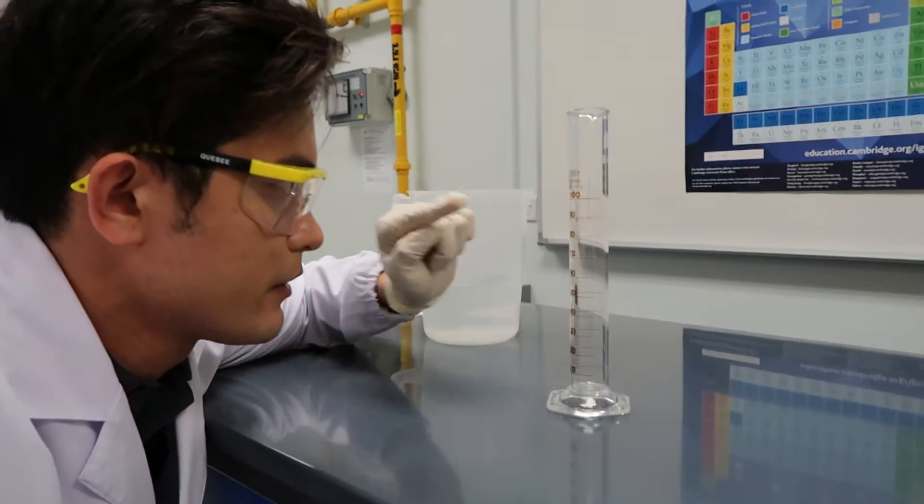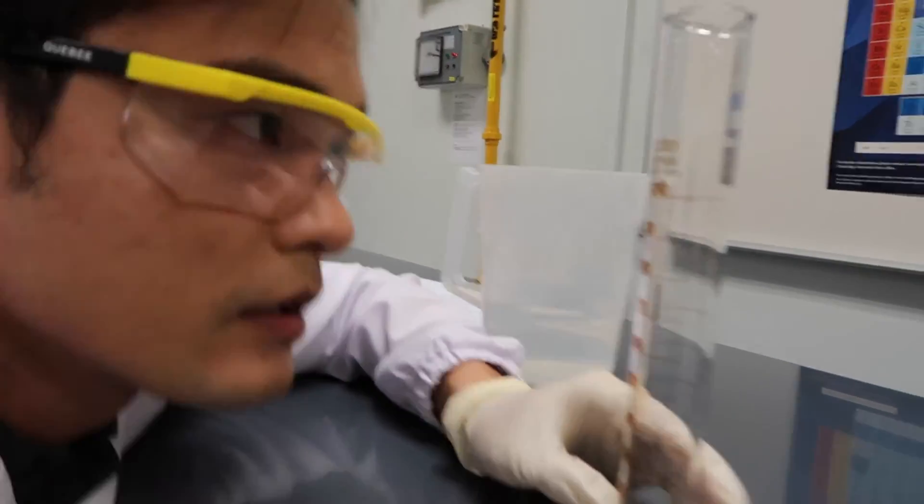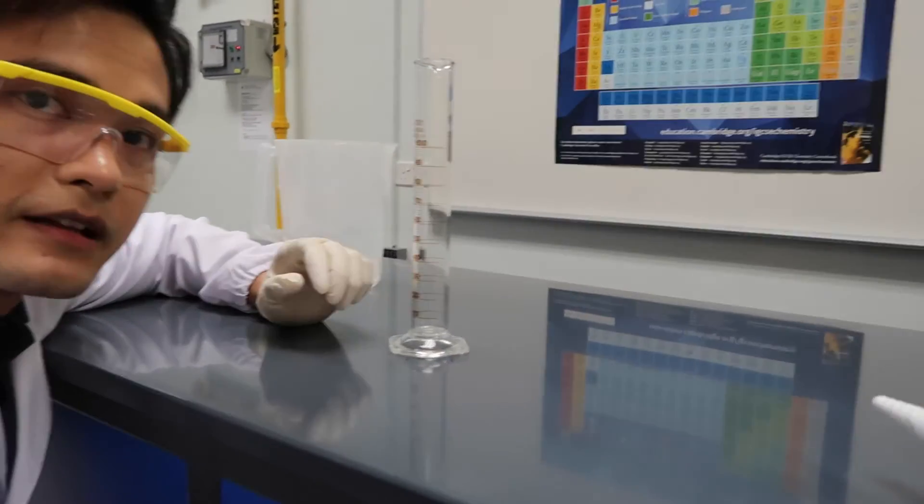For example, we want to measure 100 ml. The 100 should be aligned at eye level. See? It's 100 ml. It should be at eye level, 100 ml.